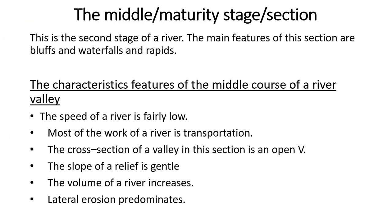Let's see the characteristics of the features of the middle course of a river valley. The speed of the river is fairly low — in this stage the speed becomes low compared to the primary stage. The main work of the river is transportation, whereby various materials that were loaded in the first stage are being transported in this middle stage. The cross-section of the valley in this section is an open view, and the slope of the river is gentle since the river flows at a normal speed.